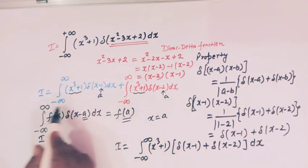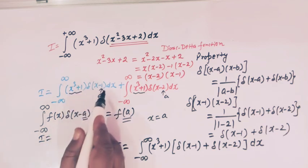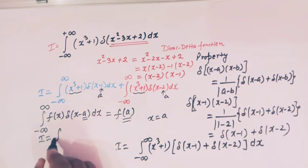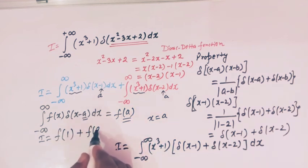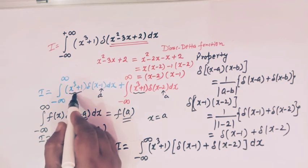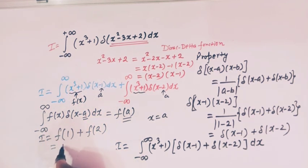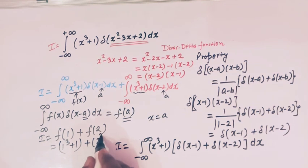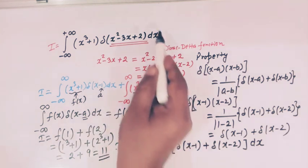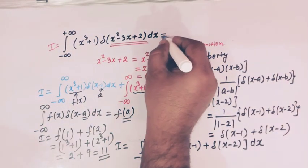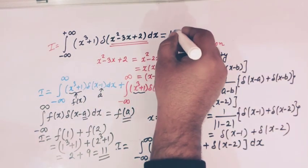Utilizing this property, we can write the expression as f(1) plus f(2). And f(1) is 1 cubed plus 1, and f(2) is 2 cubed plus 1. So 1 cubed plus 1 equals 2, and 2 cubed plus 1 equals 8 plus 1 equals 9. Therefore 2 plus 9 equals 11. So the value of this integral involving the Dirac delta function is equal to 11.